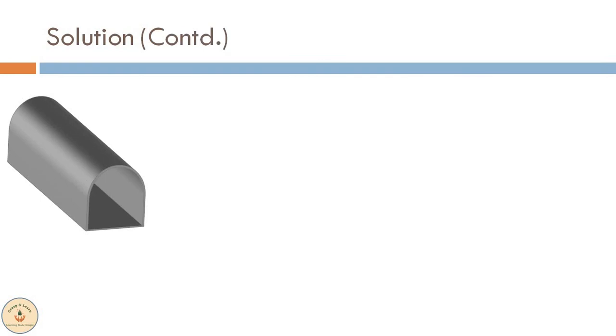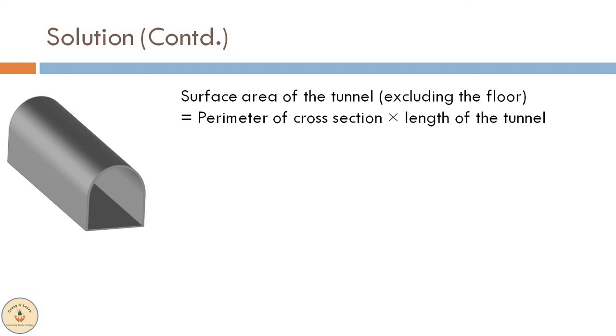Lastly, to calculate cost of plastering we need to find the surface area of the tunnel excluding the floor. This can be calculated when we multiply perimeter of cross section by length of the tunnel.